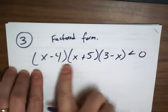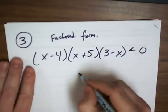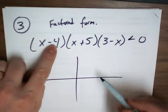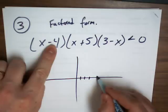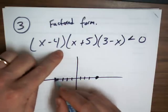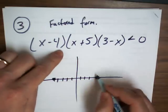The good part about this is it's already in factored form, which means that if you were to graph it, where do you know it hits the x-axis? Four. Negative five. And positive three.